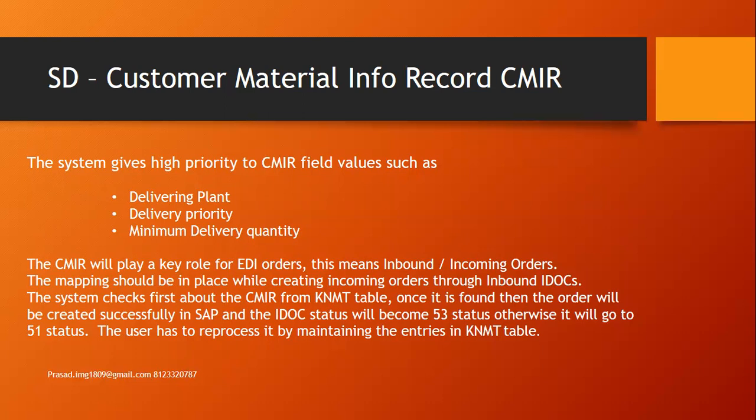Otherwise it will go to failed status, that is error status. The inbound order IDOC status in SAP is 53, whereas the failed status is 51. If a particular IDOC fails due to non-maintenance of the customer material information record, the user will maintain the details for that material in the KNMT table. When the customer material info record is saved and the IDOC is reprocessed, the system will process it successfully. That is why the customer material information record has high importance in EDA orders.